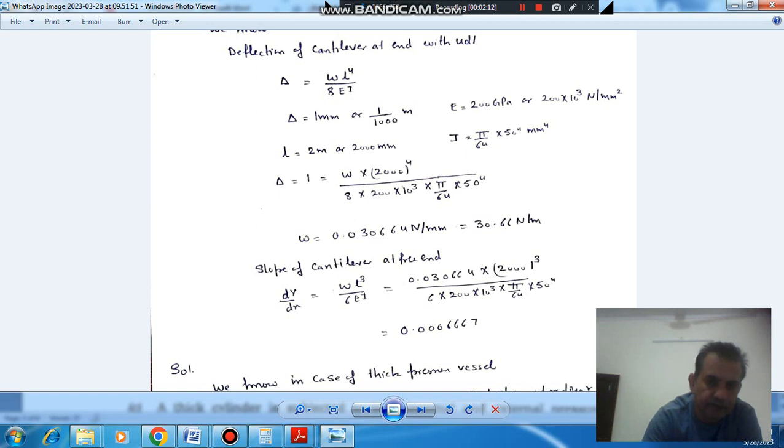So L is 2,000, and E is 200,000 Newton per mm square, and I is pi by 64 into 50 to the power 4. So the slope becomes 0.0000667.